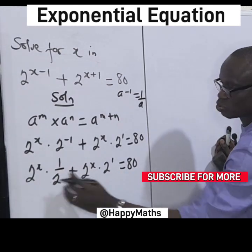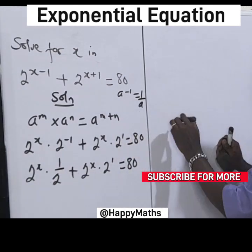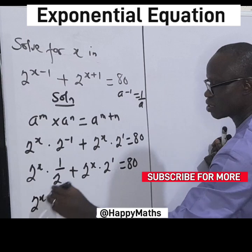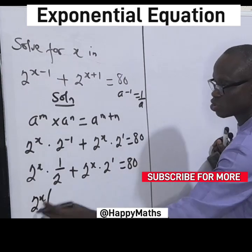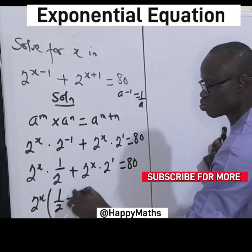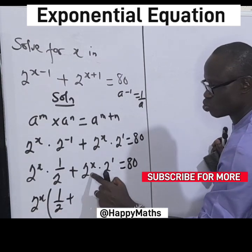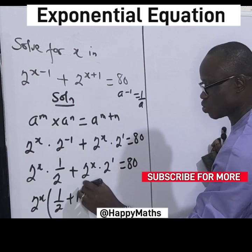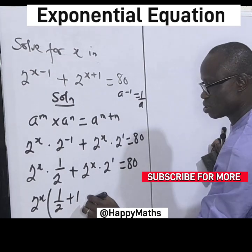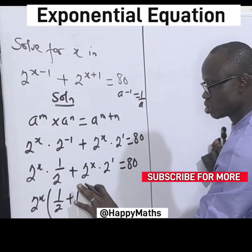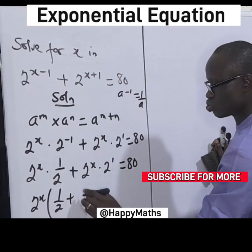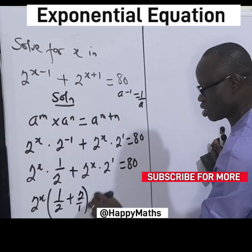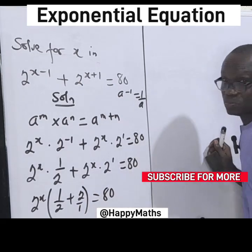Now 2^s is common to both terms, so let's factor it out. 2 raised by s — we cancel, leaving 1 over 2; plus 2 raised by s — we cancel, leaving 2 — equal to 80.